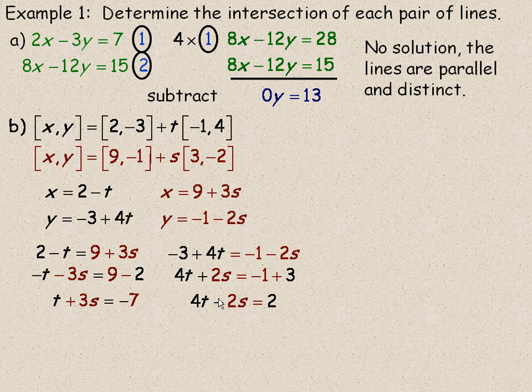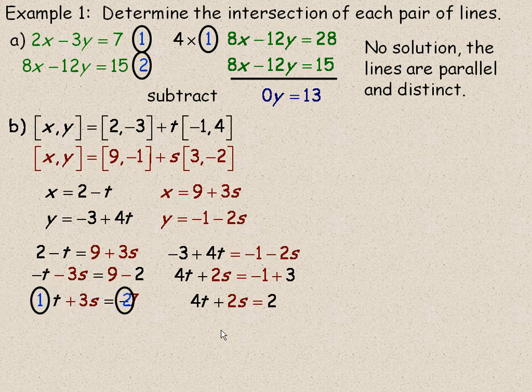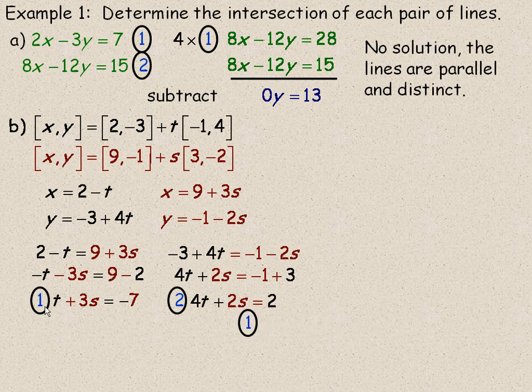And I am going to eliminate a variable just like I did in part a. And so I will call that equation 1 and this one equation 2 and I am going to eliminate the t here. So I am going to take the first equation and I am going to multiply it by 4 because 4 is the least common multiple of 1 and 4.